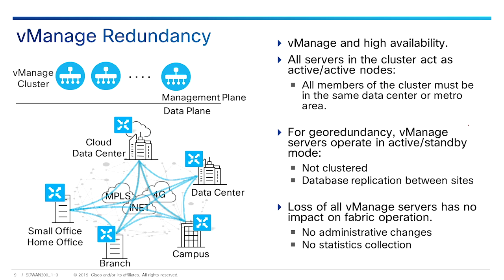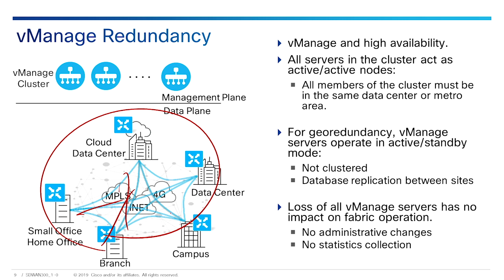A complete loss of vManage does not impact the data plane operation — traffic will flow as before. The vEdges have the configuration on them of how to connect to each other. As long as vEdge and vSmart are up and running, you can take vManage out of the equation and the network will operate as it should. However, we do lose quite a bit: we can't make any administrative changes, we don't collect statistics, you don't have the ability to detail the flows, and you can't troubleshoot at all.